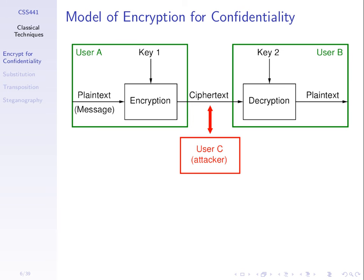The security feature is that the ciphertext, which will be intercepted by attacker C, should be such that the attacker cannot decrypt it without knowing the key, and it should be hard for the attacker to find the key. Given the ciphertext and the algorithm, the attacker cannot find the plaintext without the key, and cannot find the key from the ciphertext. If the attacker cannot decrypt, we have achieved data confidentiality.